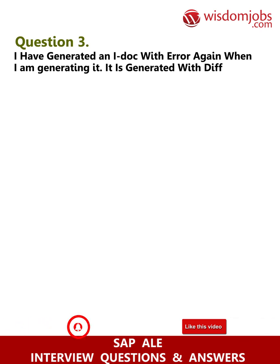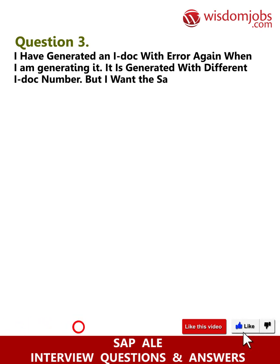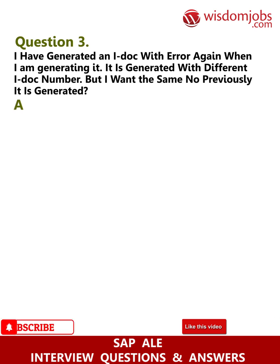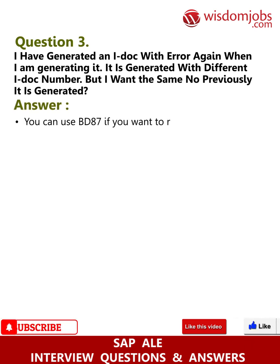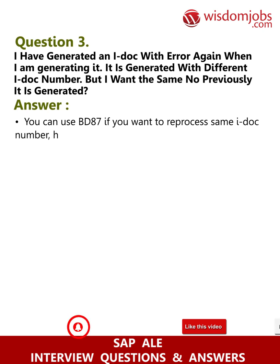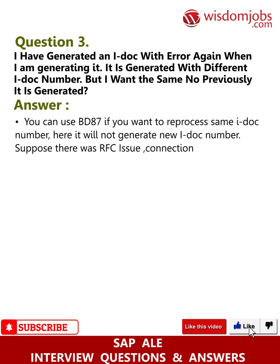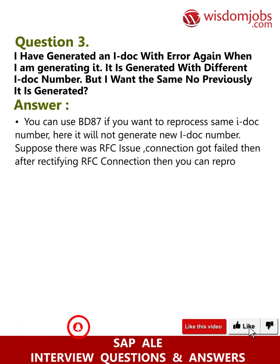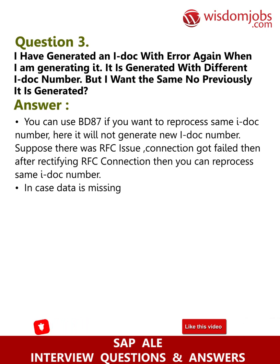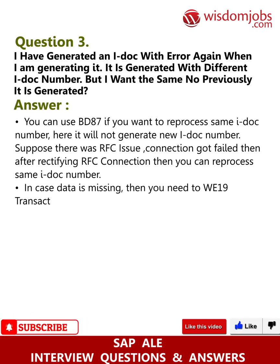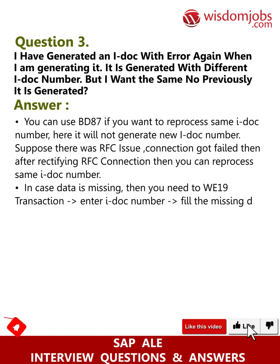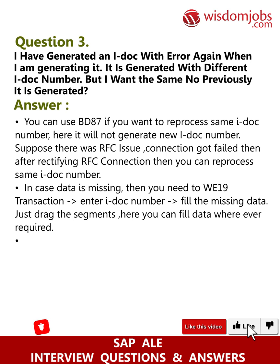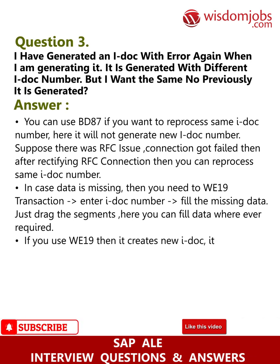Question 3: I have generated an IDoc with an error. When I regenerate it, a different IDoc number is created, but I want the same number as before. You can use BD87 to reprocess the same IDoc number — it will not generate a new IDoc number. If there was an RFC connection failure, after rectifying it you can reprocess the same IDoc. If data is missing, use WE19, enter the IDoc number, fill the missing data in the segments. Using WE19 creates a new IDoc and gives a workflow message.